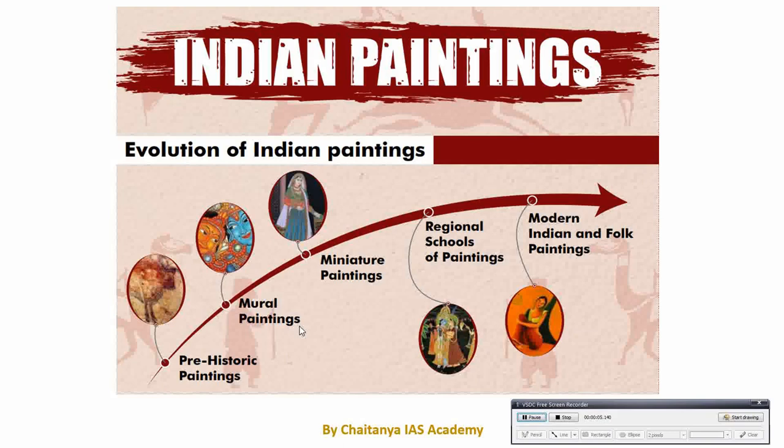Today we are going to continue our series on art and culture. Our today's topic is Indian painting. Painting is used to express our feelings, thoughts, and events from the past, ongoing, or future. In place of texture or words, sometimes we use a painting. Painting is known to human beings since a prehistorical age, around 10,000 BC. The first evidence of painting has been found in Bhimkhet caves in Madhya Pradesh, during the Stone Age period. After the Stone Age period, the mural painting and miniature painting started.